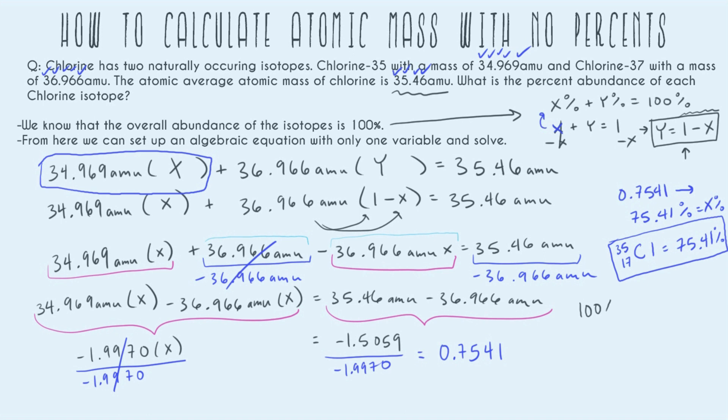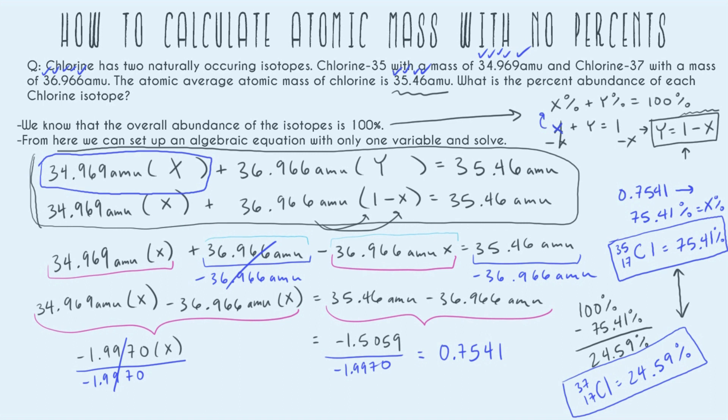And now using the same assumption that helped me do all this math, I can solve the percent of the other isotope. So that means that if I take 100 and subtract the one isotope I know, I'm going to get 24.59%, and that's the abundance of the other isotope of chlorine-37. So these are our two answers for this problem. Again, if this is confusing for you, go ahead and re-listen to my breakdown of how we get to this very first line of math. If you can get to here and to here, you can understand the rest of this problem. I hope this video helped you understand how to calculate atomic mass with no percents and good luck.